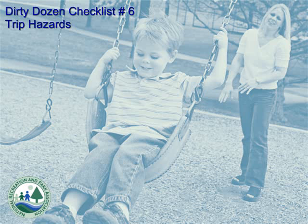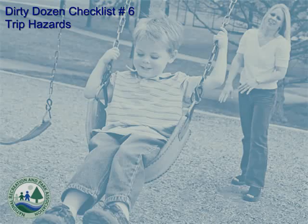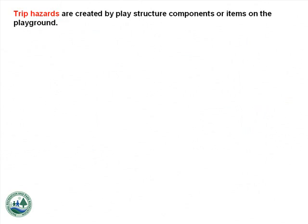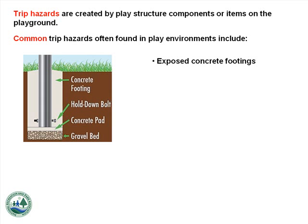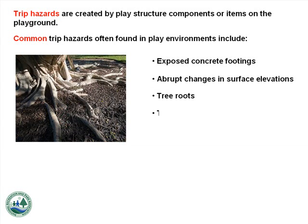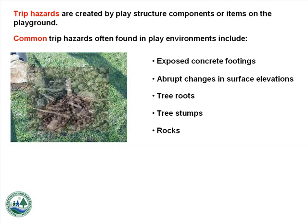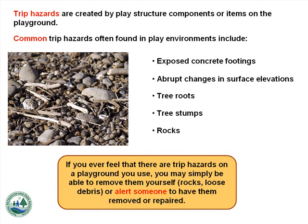Number 6: Trip Hazards. Trip hazards are created by play structure components or items on the playground. Common trip hazards often found in play environments include exposed concrete footings, abrupt changes in surface elevations, tree roots, tree stumps, and rocks. If you ever feel that there are trip hazards on a playground you use, you may simply be able to remove them yourself, as with rocks or loose debris, or alert someone to have them removed or repaired.